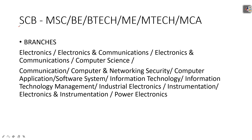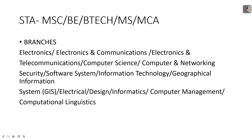For Scientist B, eligible branches include Electronics, Electronics Communication, Telecommunication, Computer Science, Communication, Computer IT, Power Electronics, and Instrumentation. For STA as well, similar qualifications and branches apply — Communication, Telecommunication, Electronics, Computer IT, and Electrical candidates can also apply for STA.